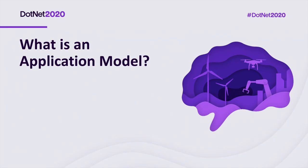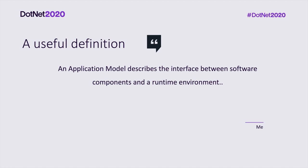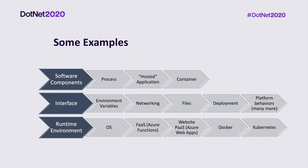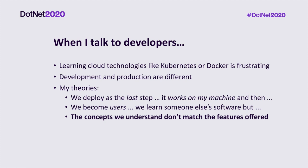Let's introduce the application model as a framework. This is my personal definition, chosen because it's useful. An application model describes the interface between software components and a runtime environment. You can alternatively think of an application model as whatever configuration data is understood by the thing you're deploying to. Software components are whatever you provide — the software that you write. The interface is the contract used to perform some task, for example, using networking to communicate between services, or using a file to store configuration data. The runtime environment is the stack that you're deploying to.